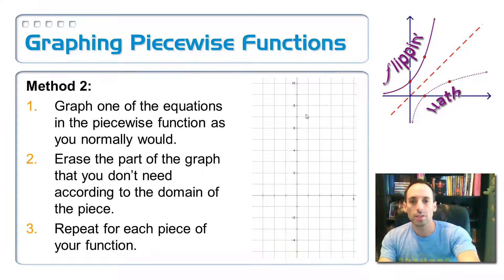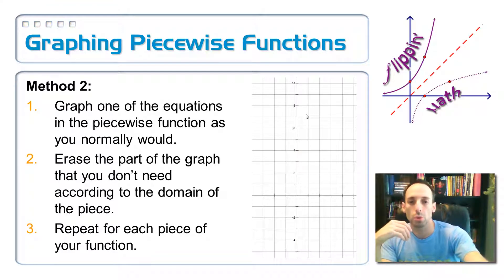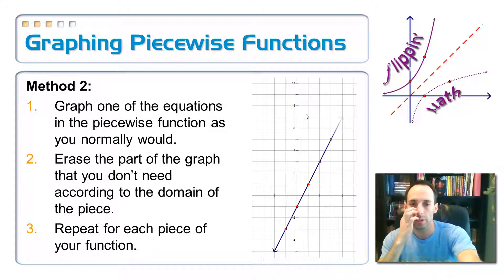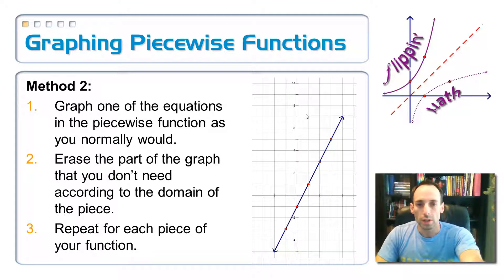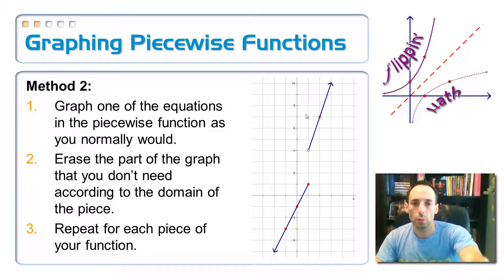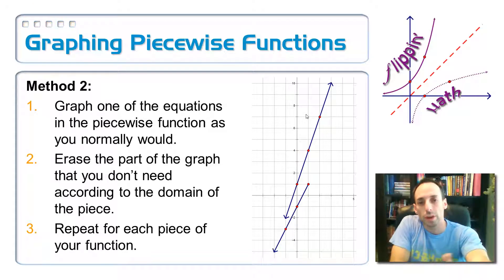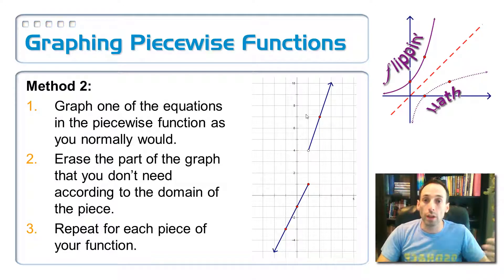Here's a different method. Just graph the equations as you normally would. That first equation was 2x minus 1, so you just graph it starting at the y-intercept. Then go back and erase the part you don't need — in this case, everything bigger than one. Repeat this for each part of the graph. The other part was 3x plus 1, so start at one, go up 3, right 1, and so on. Then erase everything to the left of that graph so there are no overlaps. That's the second method: graph the line normally, then use your eraser on the part you don't need.